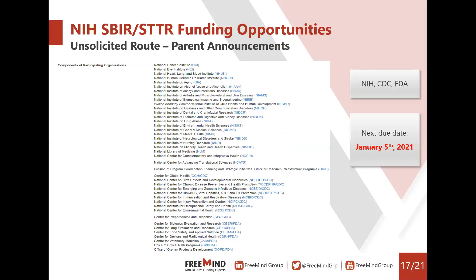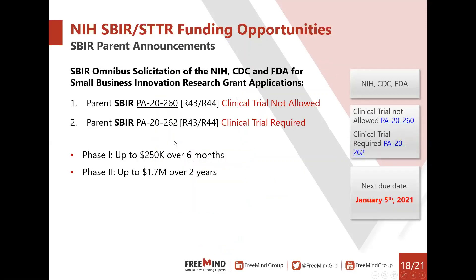If you don't find a specific solicitation that fits your project, you can go for the unsolicited approach — the parent announcement. Participating agencies include NIH, CDC, and FDA, with numerous institutes from the NIH. When you submit your application, it will be allocated to the relevant institute or agency interested in reviewing and funding your project. The next due date is January 5th next year, so the time to start writing the application is now.